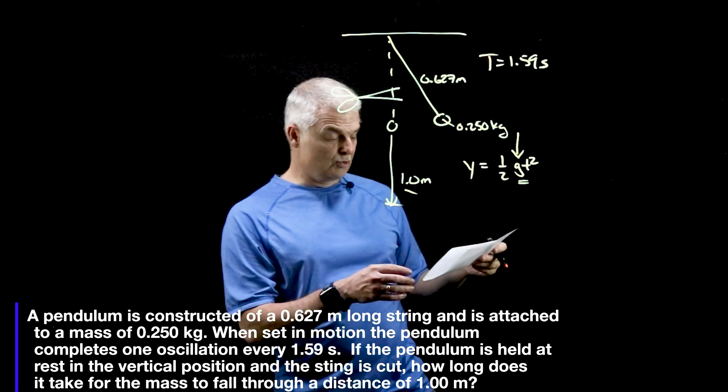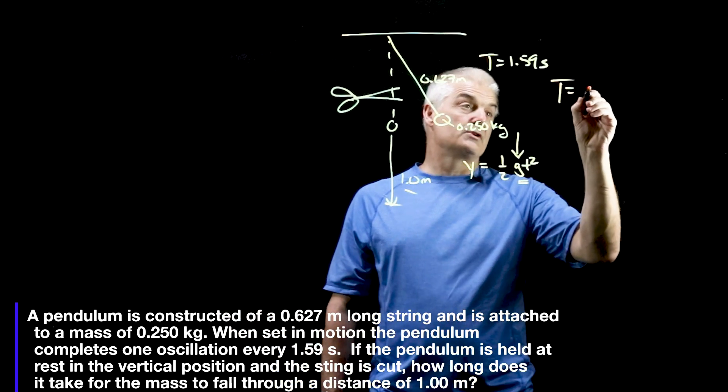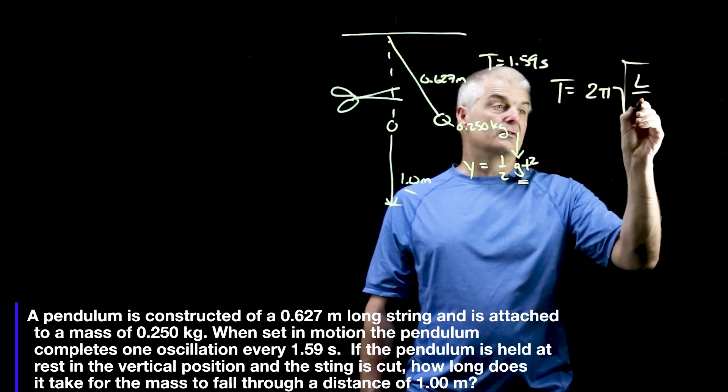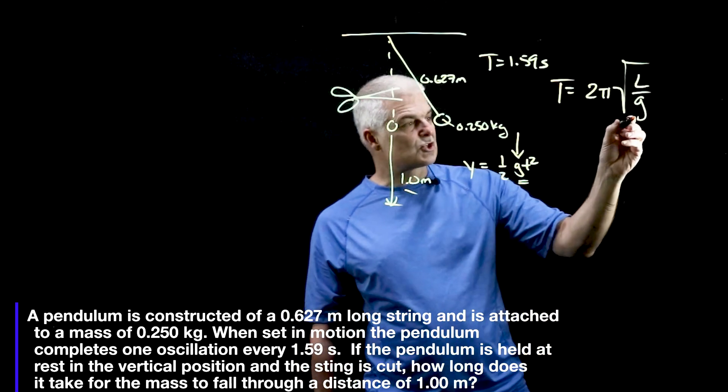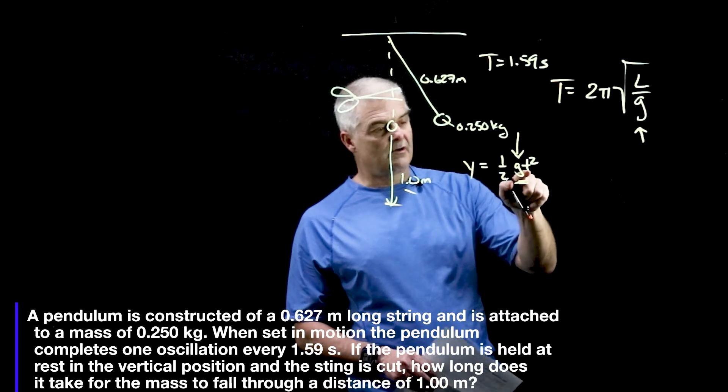This is kind of how we could figure out some cool stuff. So we're going to use the equation that t is equal to 2π square root of L over g. In this case, we want to solve for g, and then we're going to plug that into this equation and solve for this t.